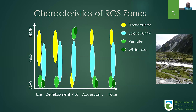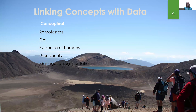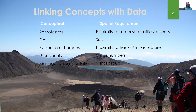What we wanted to do is see if we could use spatial data to map these characteristics across New Zealand. We took the conceptual information — thinking about remoteness, the size of areas, whether there's evidence of humans, user density from management data, and managerial regimentation — and linked those to information we were able to map. So the proximity to motorised traffic, size, proximity to tracks and other infrastructure, visitor numbers through our management data, and the type of visitor group experiencing those opportunities or the infrastructure in place. That's something we're drawing from our managerial databases.